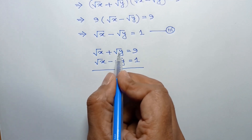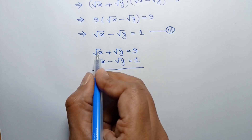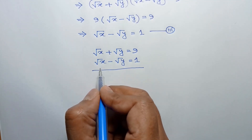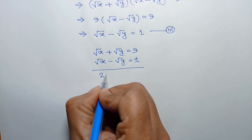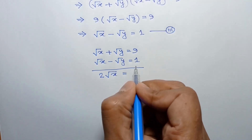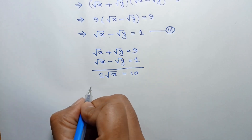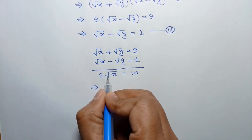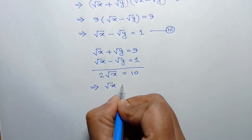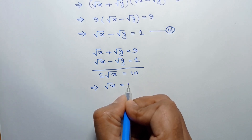The square root of y and negative square root of y will cancel out, so it will remain square root of x plus square root of x, which is 2 times square root of x, equal to 9 plus 1 equals 10. Dividing both sides by 2, we get square root of x equals 10 divided by 2, which is 5.